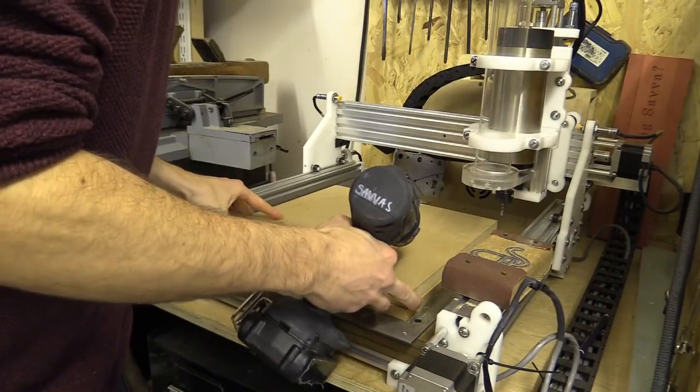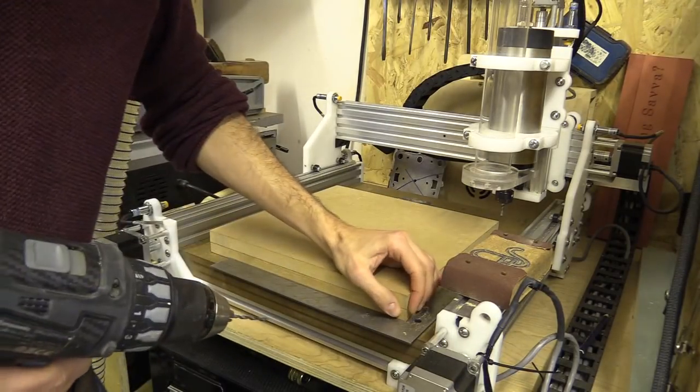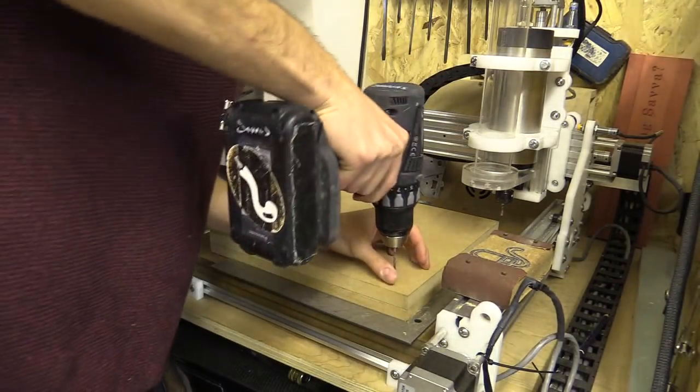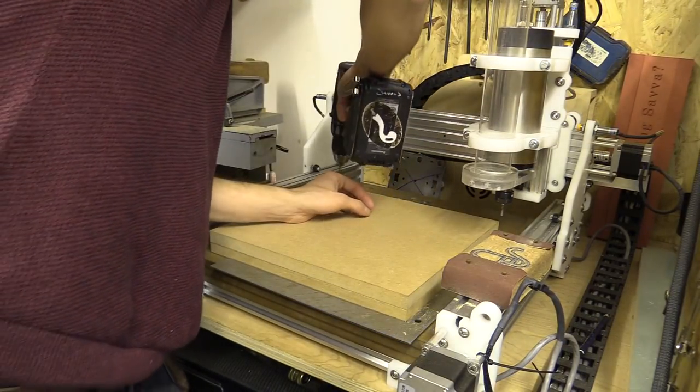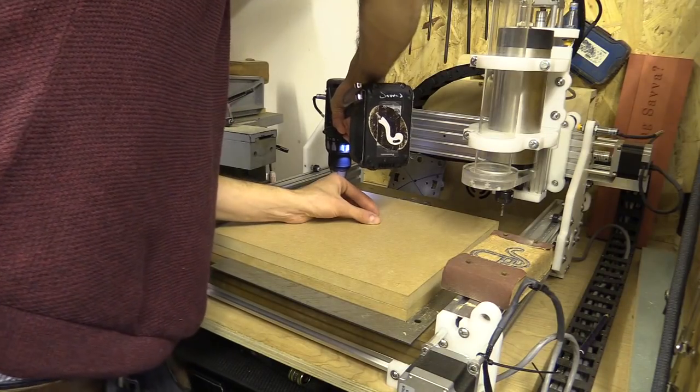So the next thing I'm going to do is square the gantry. This is not to be confused with tramming, which is aligning the spindle along the X and Y axis so it doesn't travel while moving along the Z. Squaring the gantry is a little bit simpler.